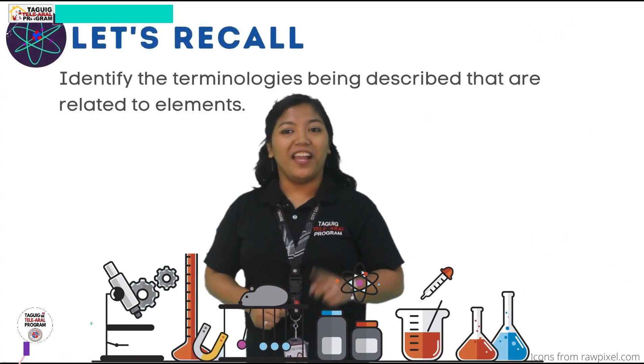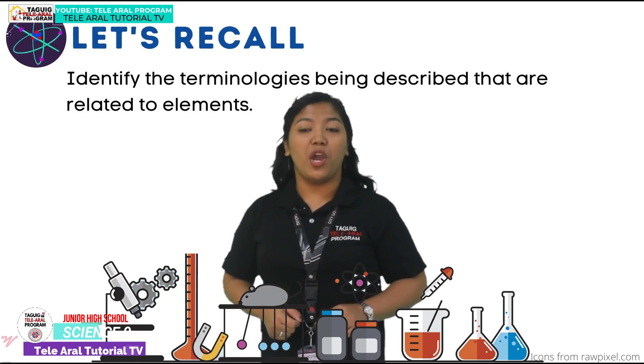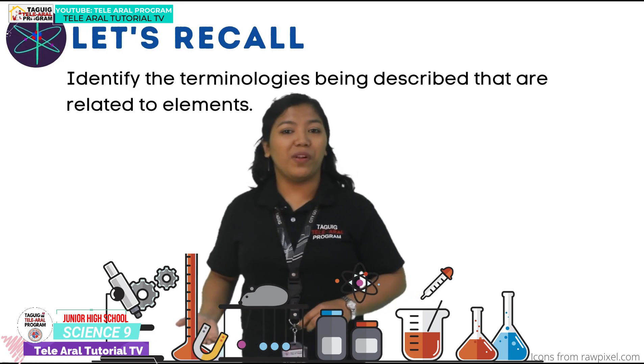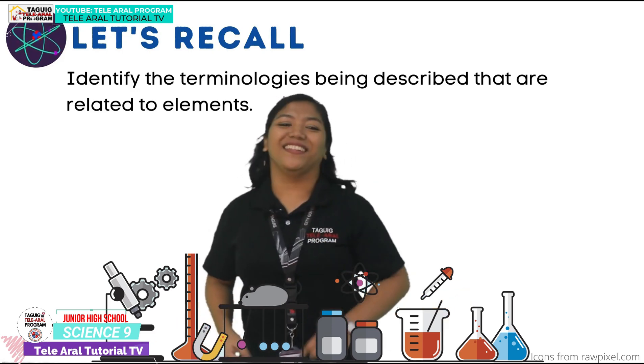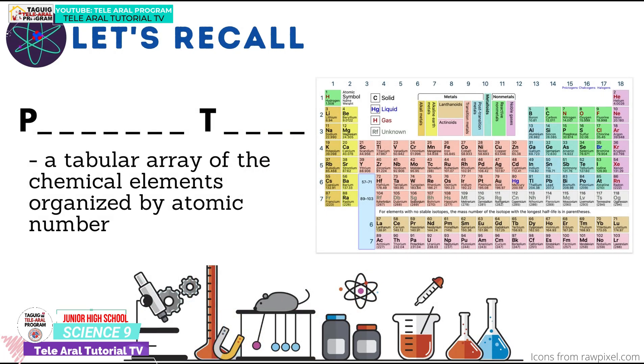Before we start, let us recall some concepts you have learned in grade 8 about chemistry. Using the definition given, identify the term on the left. Pictures will also be shown on the right as a clue. Let's start! First, what do you call the tabular array of the chemical elements organized by atomic number?